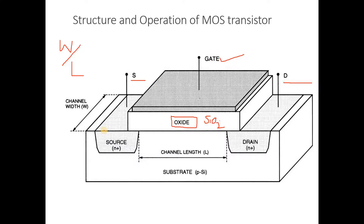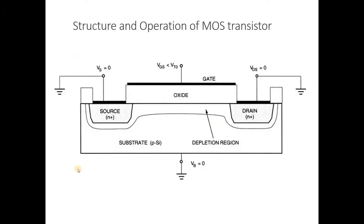The device doesn't turn on immediately — many things are associated with this. Next we will discuss the structure and operation of the MOS. The MOS system behaves in a different manner and physics is involved in understanding the working of the MOS structure. Here we have the MOS structure with drain, source, and oxide. Gate-to-source potential with body grounded is being applied.